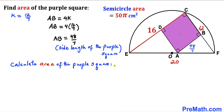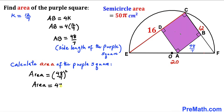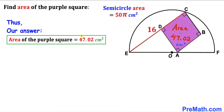For the final step, we calculate the area of the purple square using area = s², where s is the side length. With s = 48/7 cm, the area = (48/7)² = 2304/49 ≈ 47.02 cm².